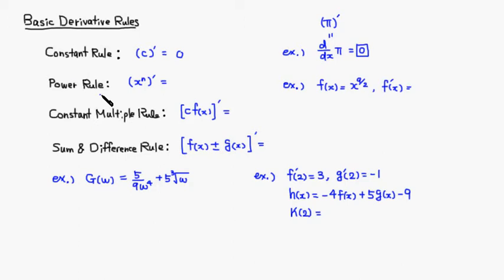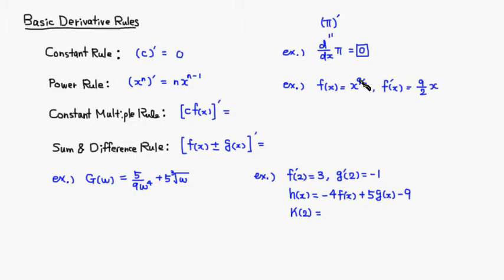The second rule is the power rule. If you take the derivative of x to the n, the derivative is: put n in front, keep the same variable x, and subtract 1 from the power, giving you x to the n minus 1. For example, if f(x) = x to the 9/2, the derivative puts the power 9/2 in front, keeps x, then subtracts 1: 9/2 minus 1 equals 9/2 minus 2/2, which is 7/2. So f'(x) = (9/2)x to the 7/2.